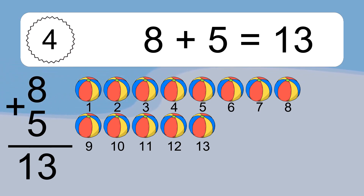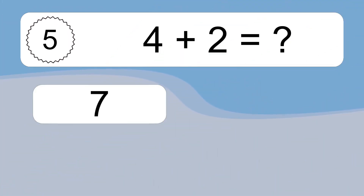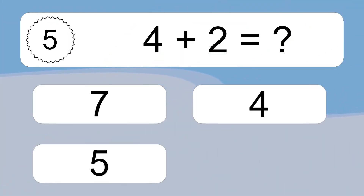8 plus 5 equals 13. Let's count it. 1, 2, 3, 4, 5, 6, 7, 8, 9, 10, 11, 12, 13.